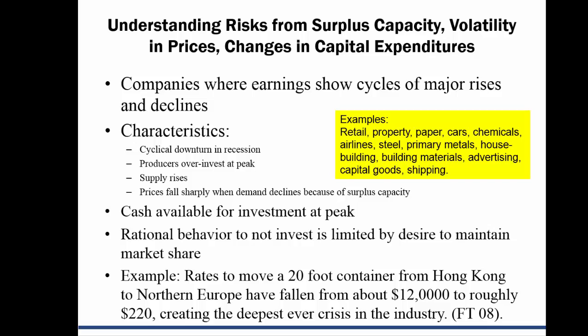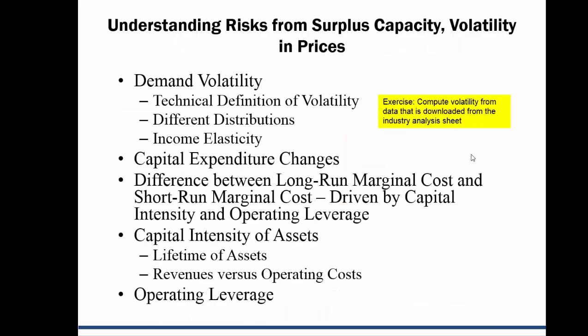This example — rates to move a 20-foot container from Hong Kong: 12,000 down to 220. That's an example of surplus capacity in cyclical industries. That's why I really love to see long-term history as well.